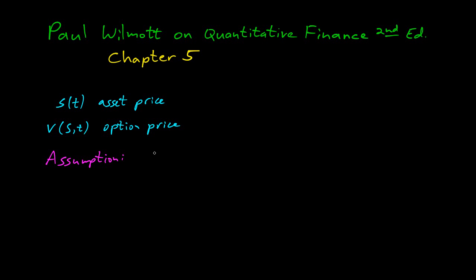Let's make an assumption. Assume that S is lognormal. We saw that before. What does that mean? That means dS is the drift plus the volatility. The drift is proportional to the size of the asset, and the volatility is also proportional to the size. This gives the lognormal random walk.